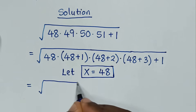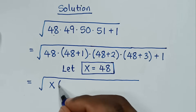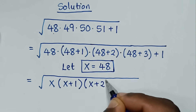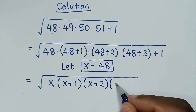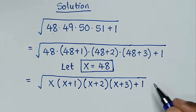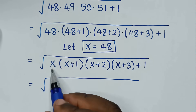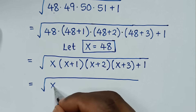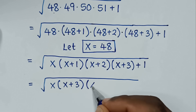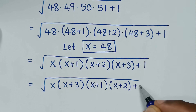It will be equal to square root of x times (x+1) times (x+2) times (x+3) plus 1. Into here, we take x times (x+3) and multiply (x+1) times (x+2), giving square root of x(x+3) times (x+1)(x+2) plus 1.